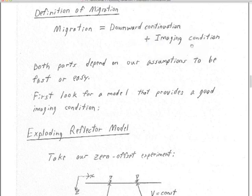Every migration I've ever worked on has some sort of downward continuation process and some sort of imaging condition. We're going to look at it in this class in terms of wave field transformations. Some sort of process is the downward continuation and some sort of process is the imaging condition.